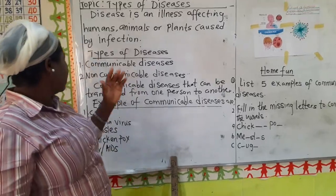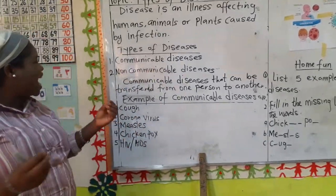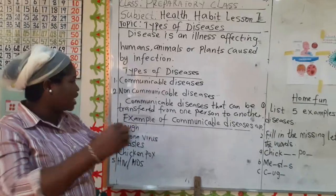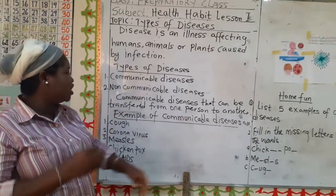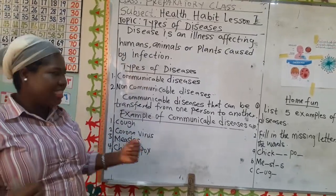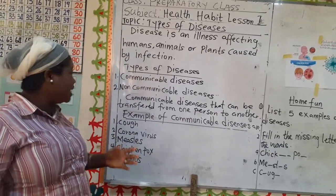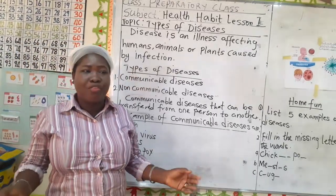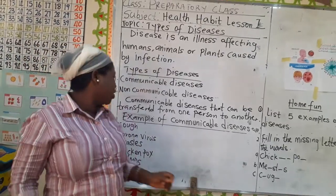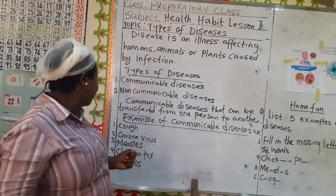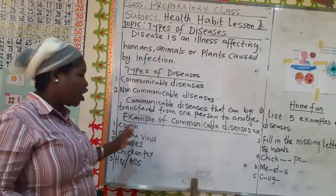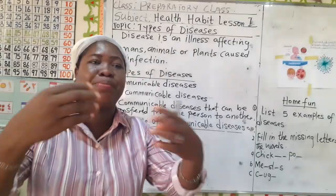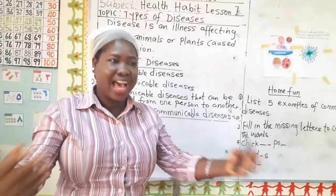Now we are going to look at examples of communicable diseases that we can transfer from one person to another. Number one, cough. When you cough, learn to cover your mouth because it can be transferred from one person to another.